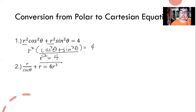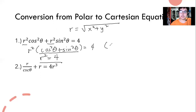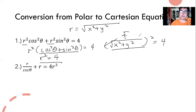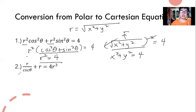Now we're going to change it into Cartesian. Remember, r is equal to the square root of x squared plus y squared. So we substitute that in. Since r is squared, the square root is eliminated. This gives us x squared plus y squared equals 4.